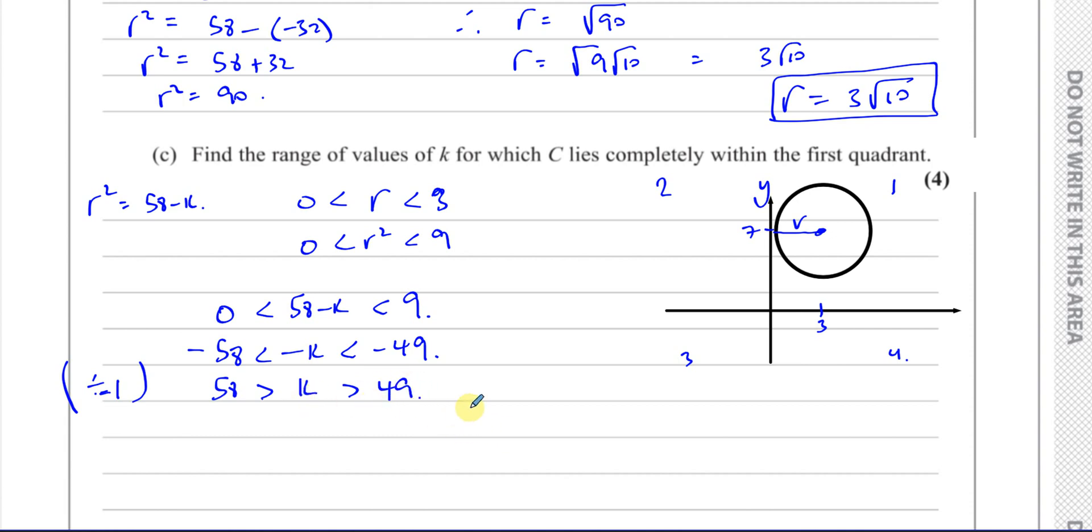If k is between 49 and 58, then the radius will be greater than 0 and it will be less than 3. And there's the answer for this question. That will cause this circle to lie completely within the first quadrant, so the radius is less than 3 and more than 0.